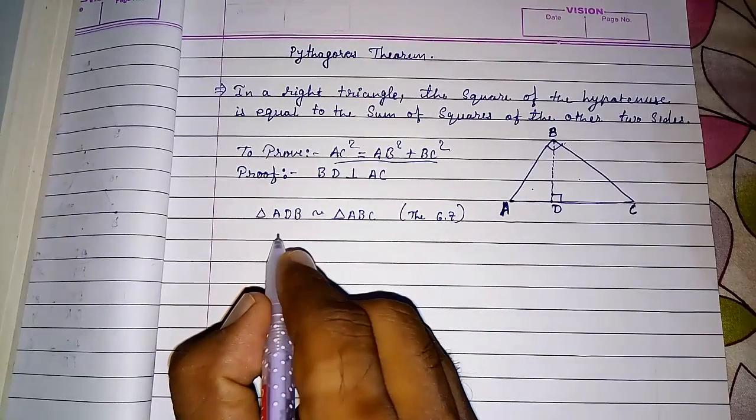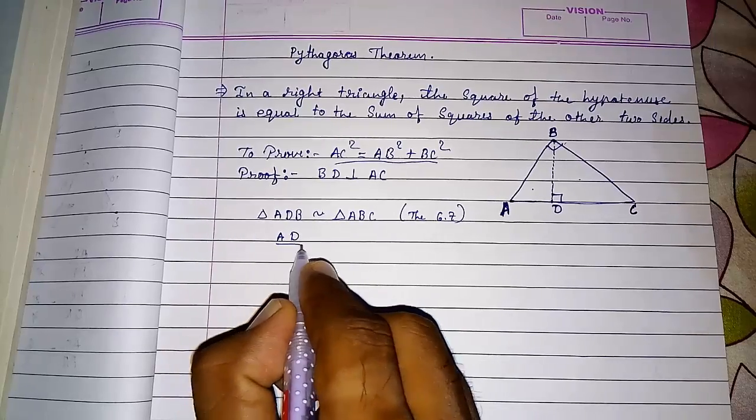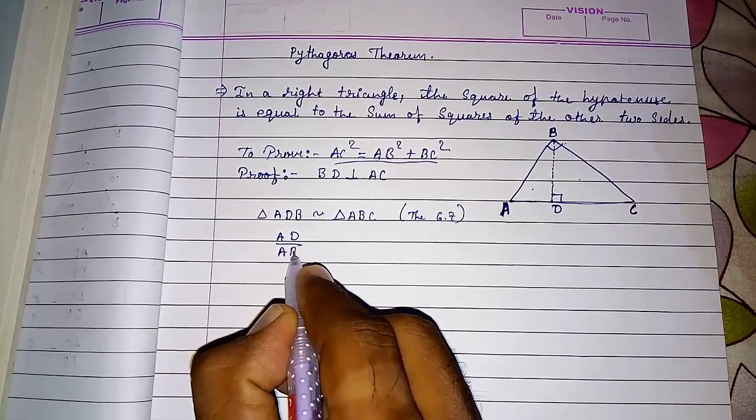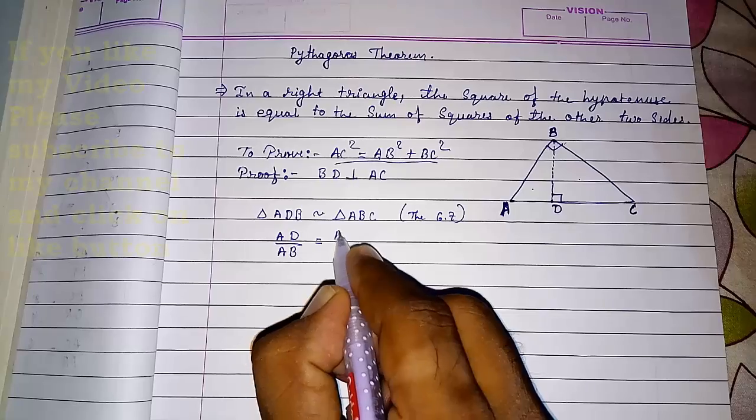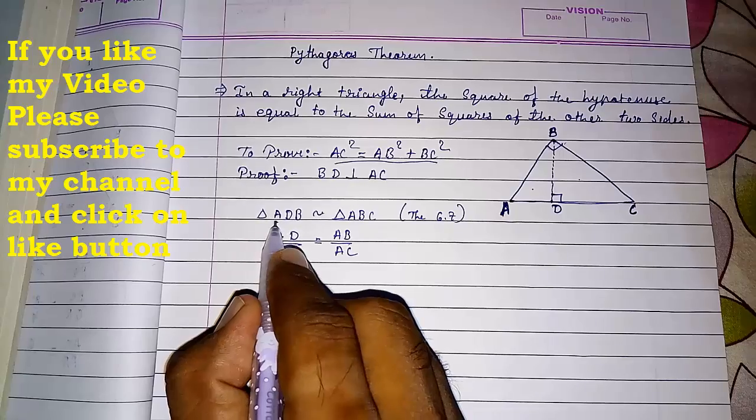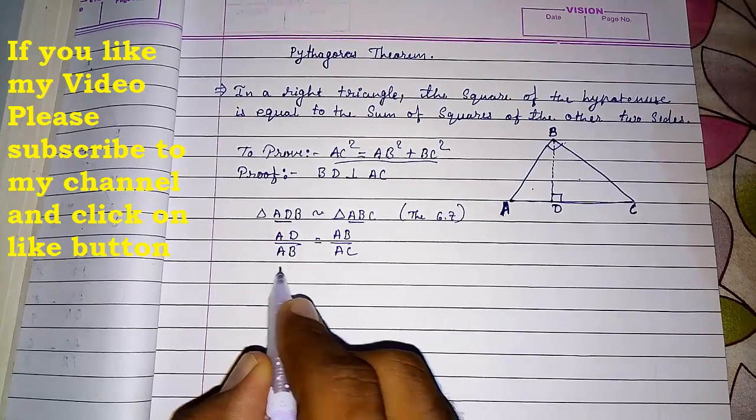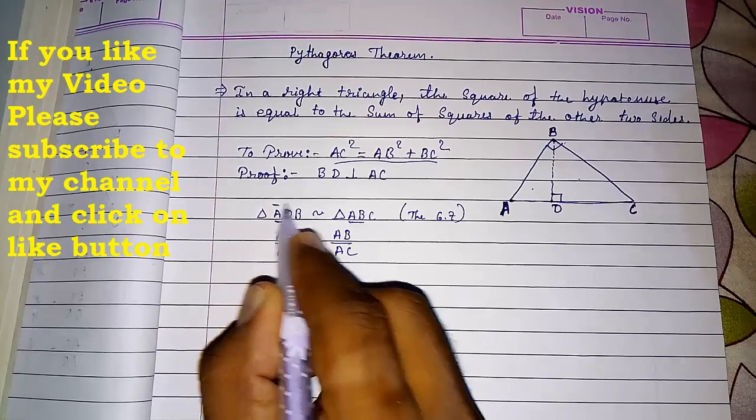So if they are similar, what can I say? Sides will be proportional. So AD by AB equals AB by AC. Look here - first and this two, so first I have to take these two: AD by AB, and then I have taken this and this.